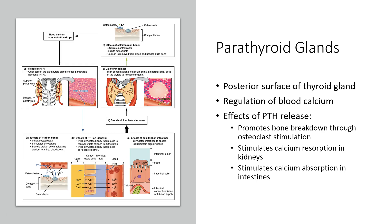On the posterior surface of our thyroid, we have our parathyroid glands. The parathyroid gland releases parathyroid hormone, which functions to regulate blood calcium. When the blood calcium concentration gets too low, this signals the release of parathyroid hormone. The release of parathyroid hormone has three main effects. First, parathyroid hormone promotes the breakdown of bone. It inhibits osteoblast activity — osteoblasts are the cells that build bone. It also stimulates osteoclast activity — osteoclasts are the cells that break down bone. This breakdown of bone then releases calcium into the bloodstream.